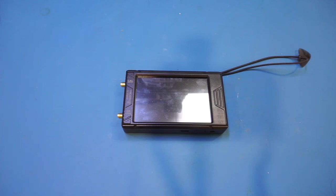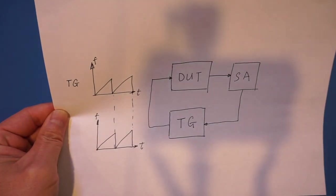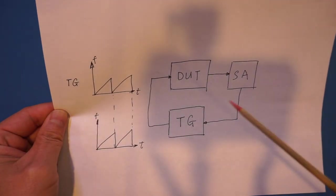So this brings us to why it would be advantageous to use a tracking generator. A tracking generator, as its name implies, tracks the frequency of the Spectrum Analyzer's sweeping oscillator. Typically that's the first LO, so that the tracking generator's frequency output matches the center frequency of the bandpass filter in the Spectrum Analyzer's IF stage. And what that means is, as a result, the two frequencies we talked about earlier are now in sync.